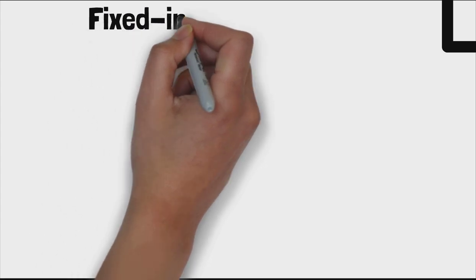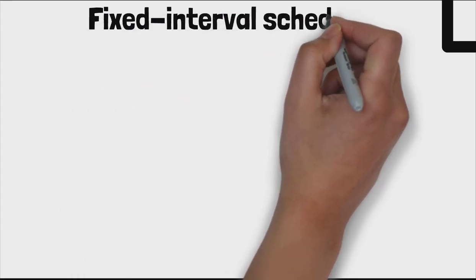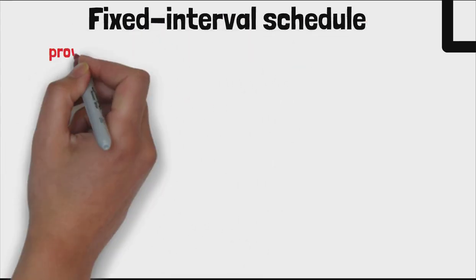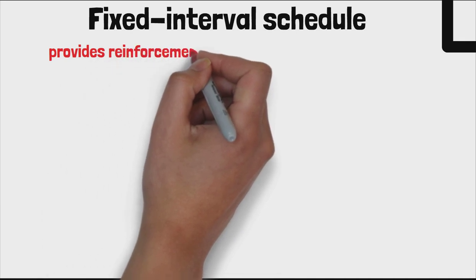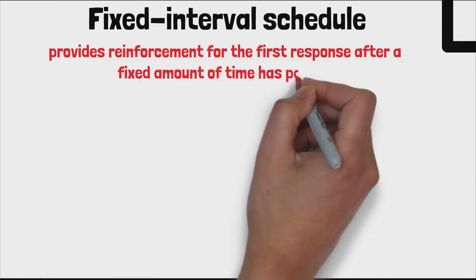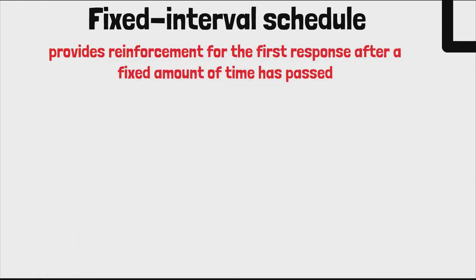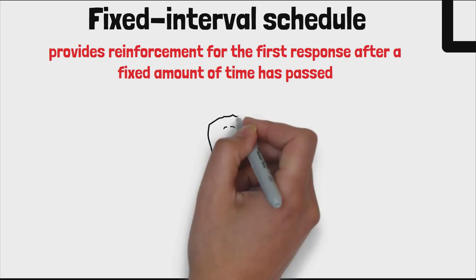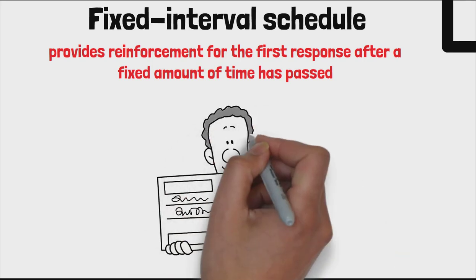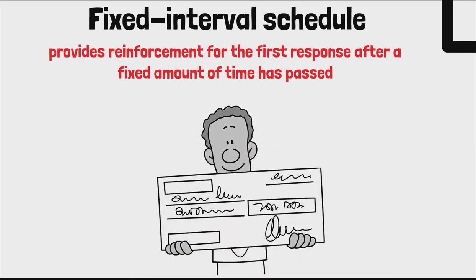Fourth is the fixed interval schedule. A fixed interval schedule provides reinforcement for the first response after a fixed amount of time has passed. For example, a weekly paycheck is given to an employee who works regularly.